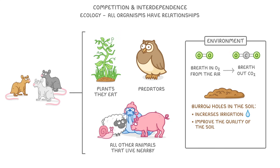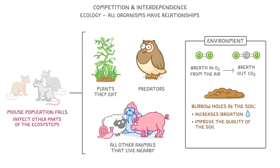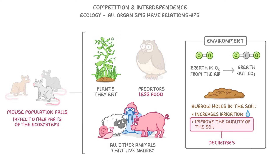Because of all these relationships, if any one part of the ecosystem changes — for example the mouse population falls — it can affect all other parts of the ecosystem. So in this case, it could mean that predators have less food, and soil quality decreases.